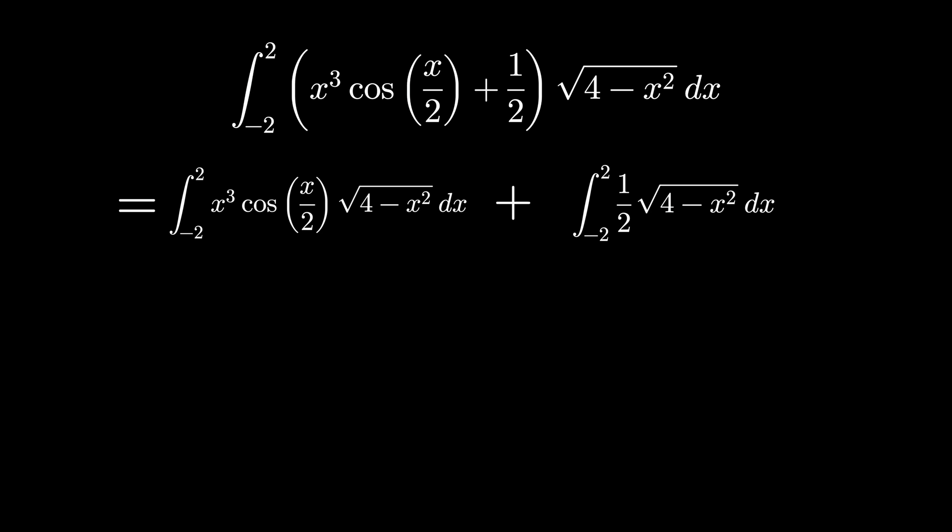And although this function is quite wonky, we can just rely on the algebraic fact that x cubed is an odd function, cosine of x over 2 is an even function, and the square root of 4 minus x squared is also an even function. When it comes to these functions, an odd times an even times an even is an odd. And so this function that we're integrating over a symmetric interval is an odd function, meaning the entire integral is zero for this part.